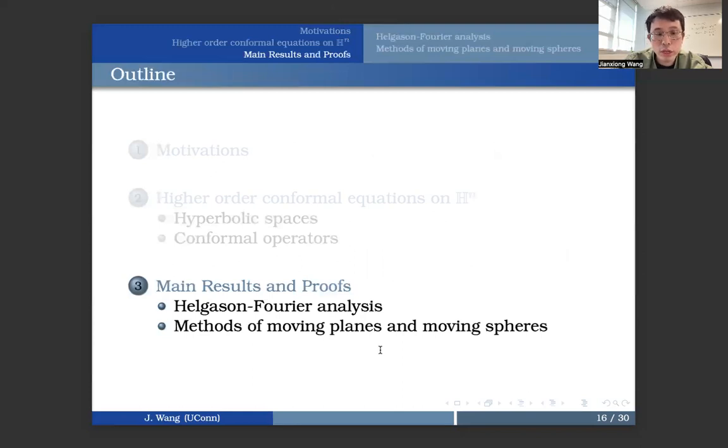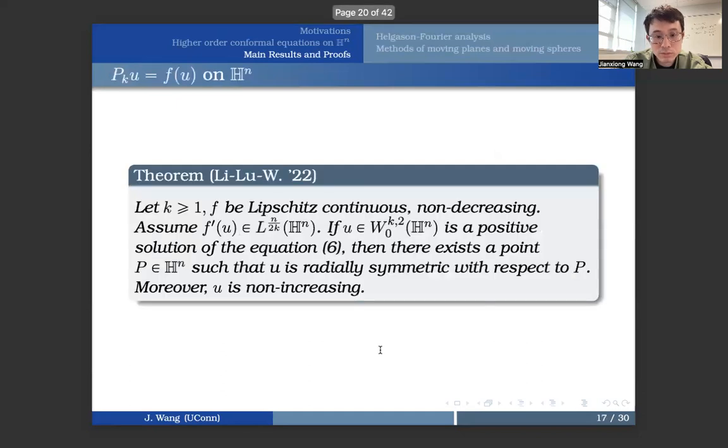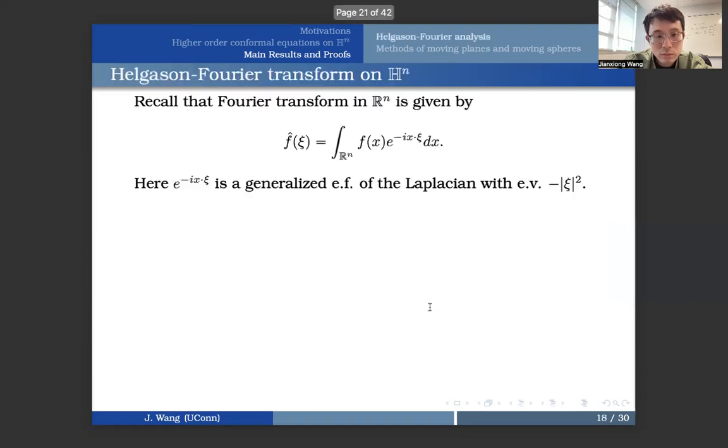So now we are almost ready to talk about the main results and the proofs. So the first result with respect to this equation, as I just mentioned, pKu equals f of u on the entire hyperbolic space. And here, we assume f to be Lipschitz continuous, non-decreasing, and moreover, we impose some regularity for this derivative. And so now, if u is W k,2 local, it's a positive solution of the equation pKu equals f of u, then there exists a point p such that u is radially symmetric with respect to p. Moreover, u is not increasing in the radial variable.